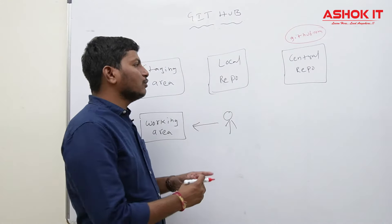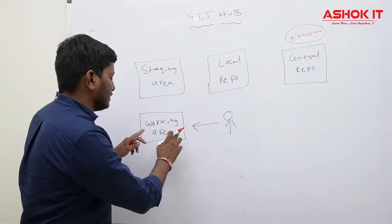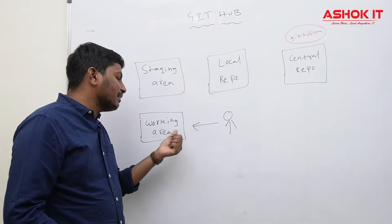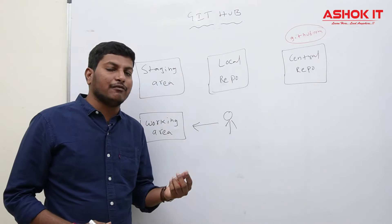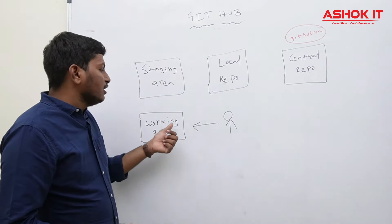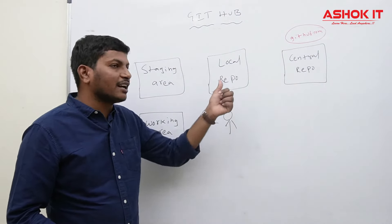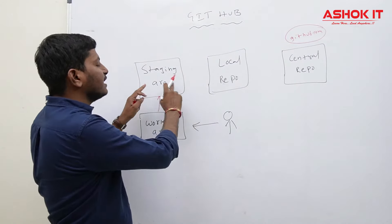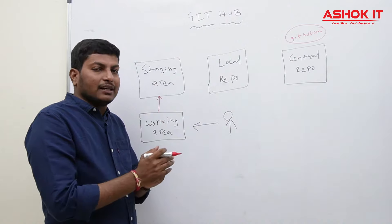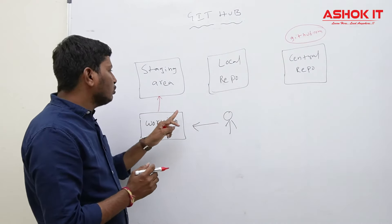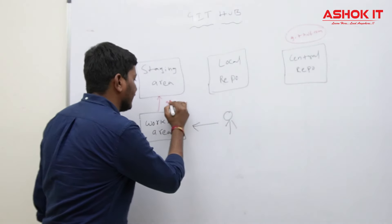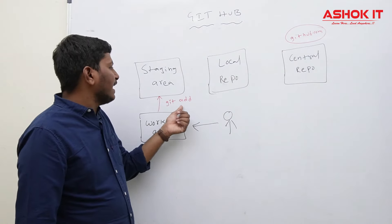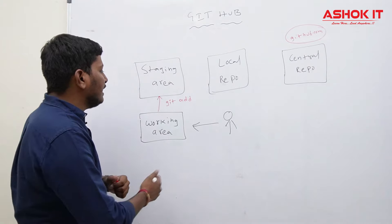We need to follow a process. The place where the developer is working — creating or modifying files in some folder or directory on their laptop — is called the working area. Once files are created or modified, if you want to commit that file to the remote repository, you first need to add it to the staging area. Any files which are ready to commit are called staged files. To add files to the staging area, we use the git add command.